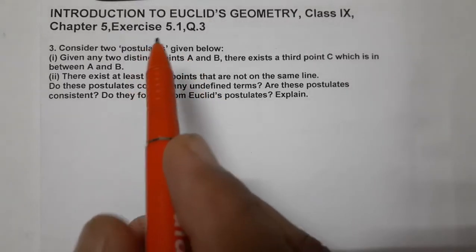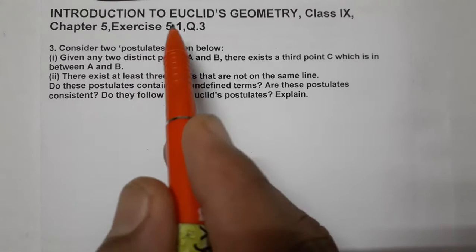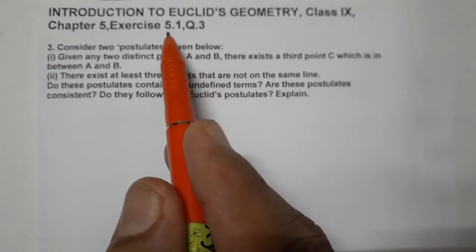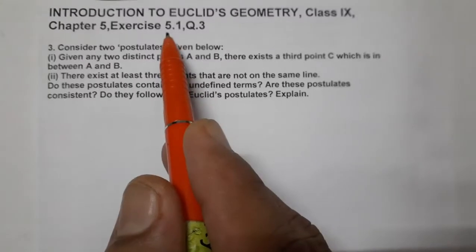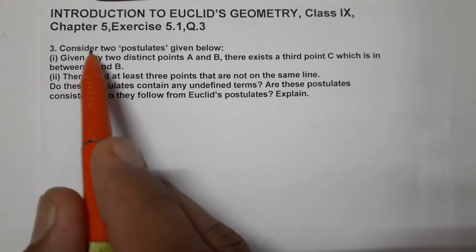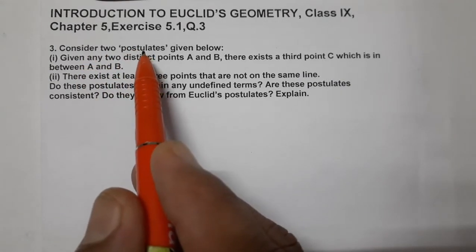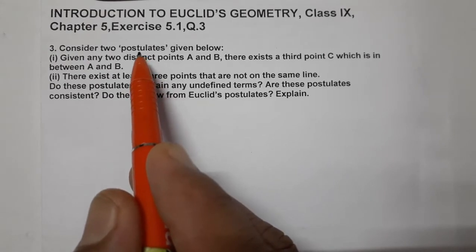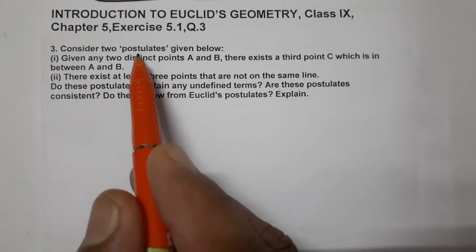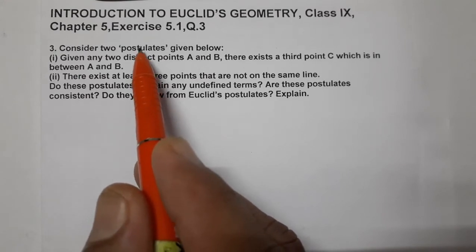Hello students, today we are going to do question number three of Exercise 5.1. The question says: consider two postulates. You know about postulates — postulates are related to geometry. Axioms and postulates — the postulates which are related to geometry are called postulates.